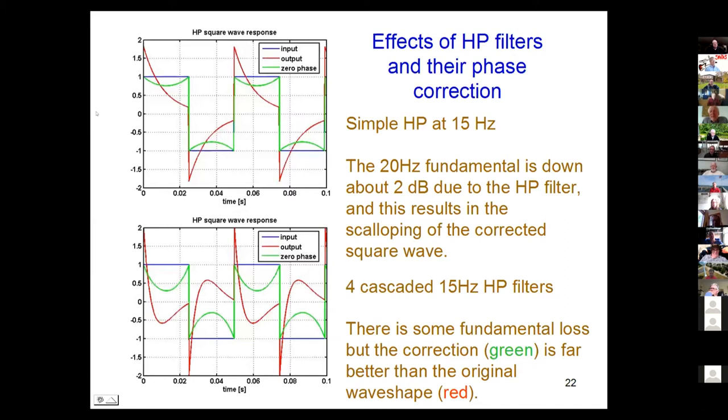Here's what effect a high-pass filter has on a signal. If we take a square wave, the blue here, and put it through a 15 hertz single high-pass, we get the red curve. You're all familiar with that. If we set the phases of that signal to zero, which is the best we can do, we get the green curve. It's not quite the same because we have some loss of fundamental, but it's a much better representation.